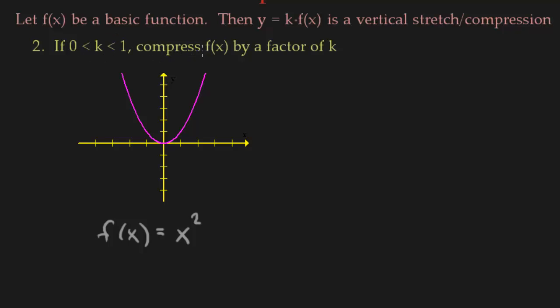So we're going to compress f of x by a factor of k. So in the last example, we stretched up. Now imagine pushing something down towards the x-axis. So in this example, we have k, which is 1/4, which is less than 1, still positive.